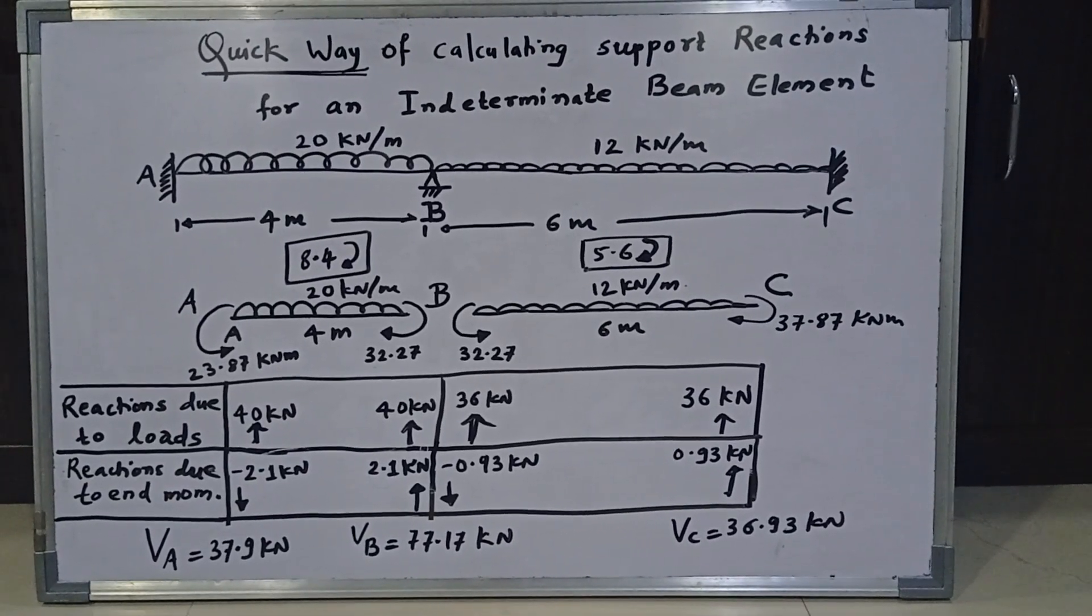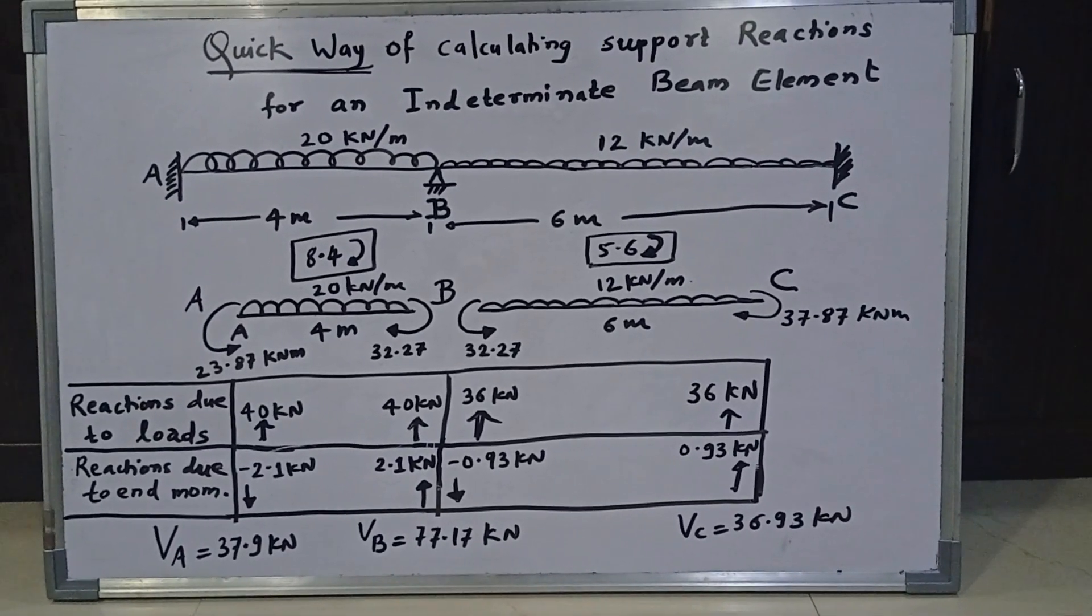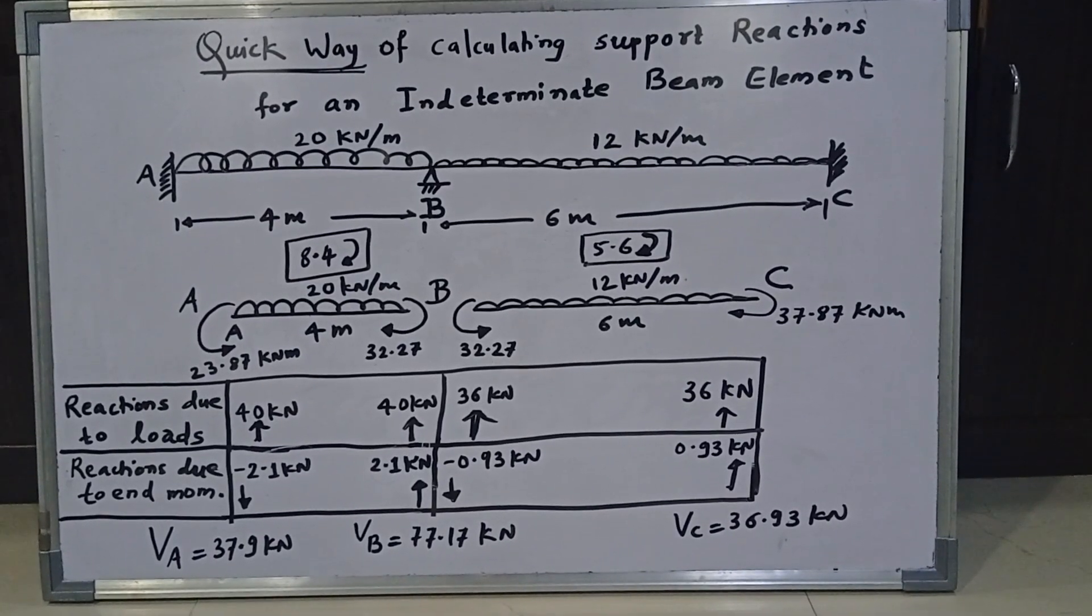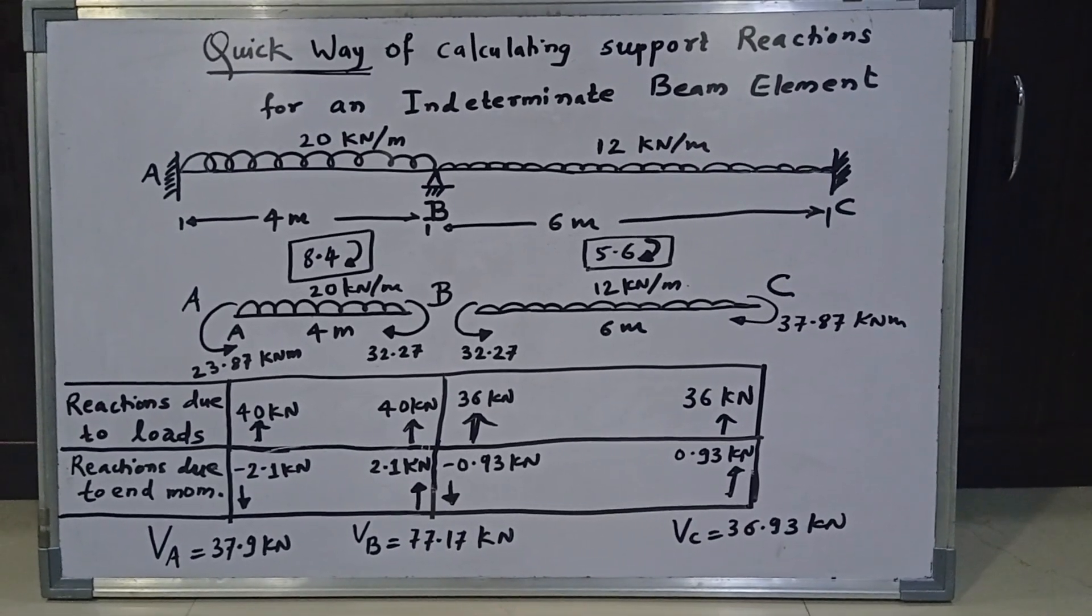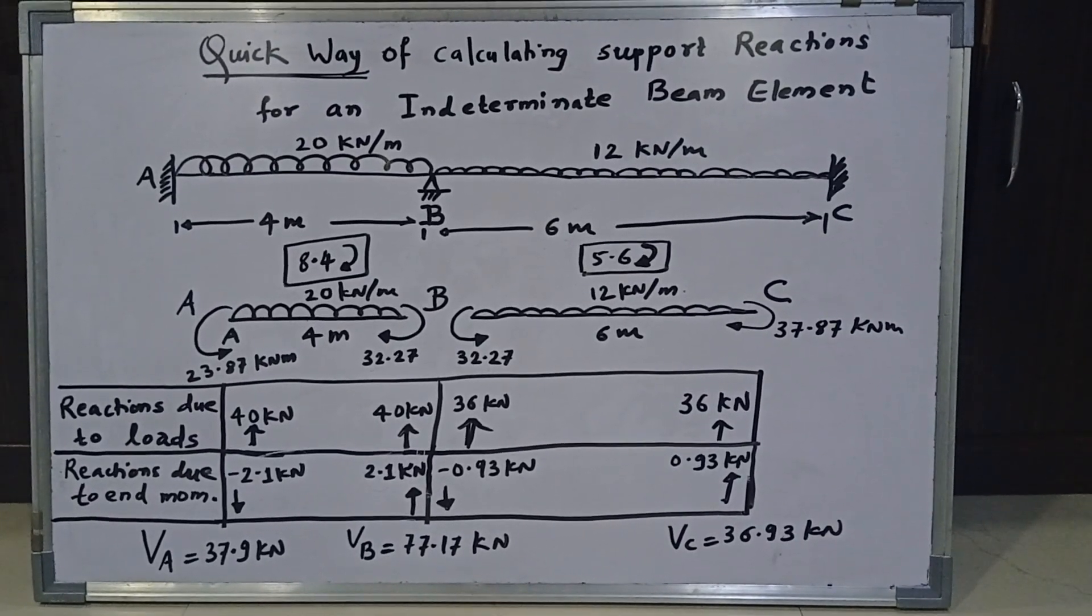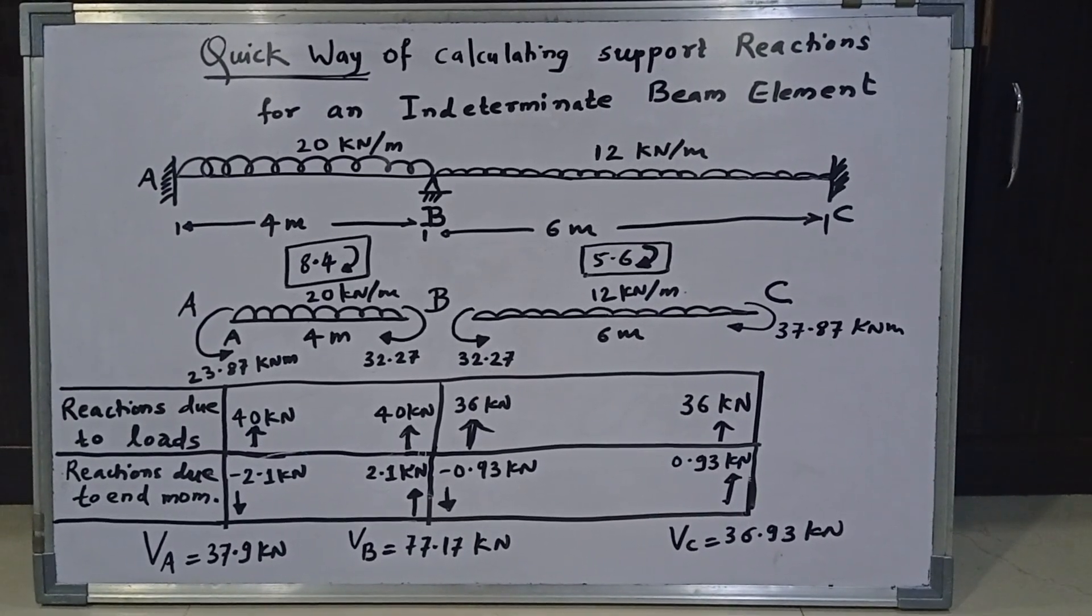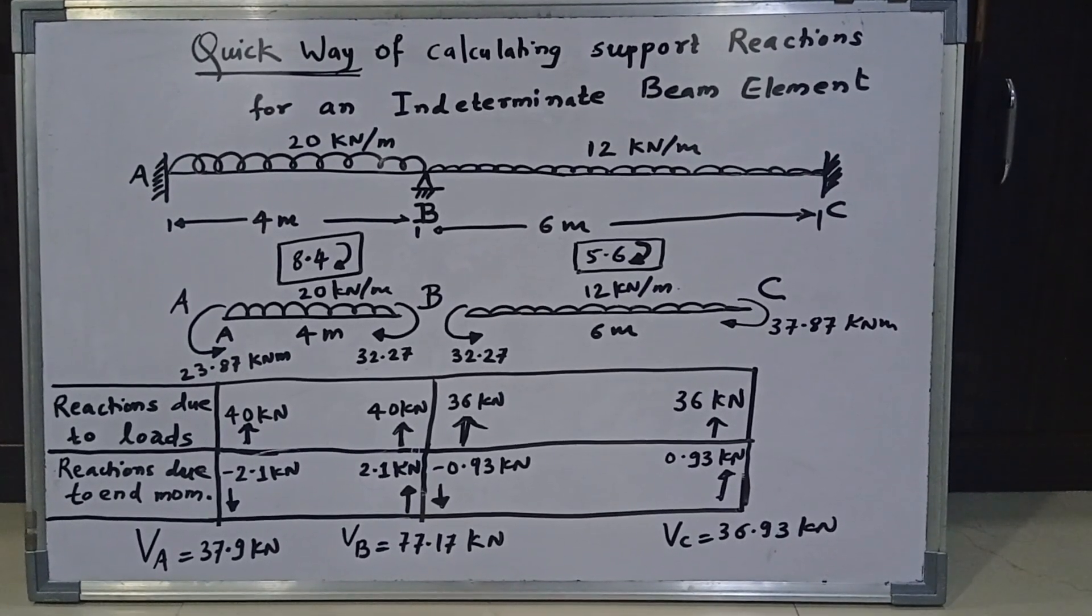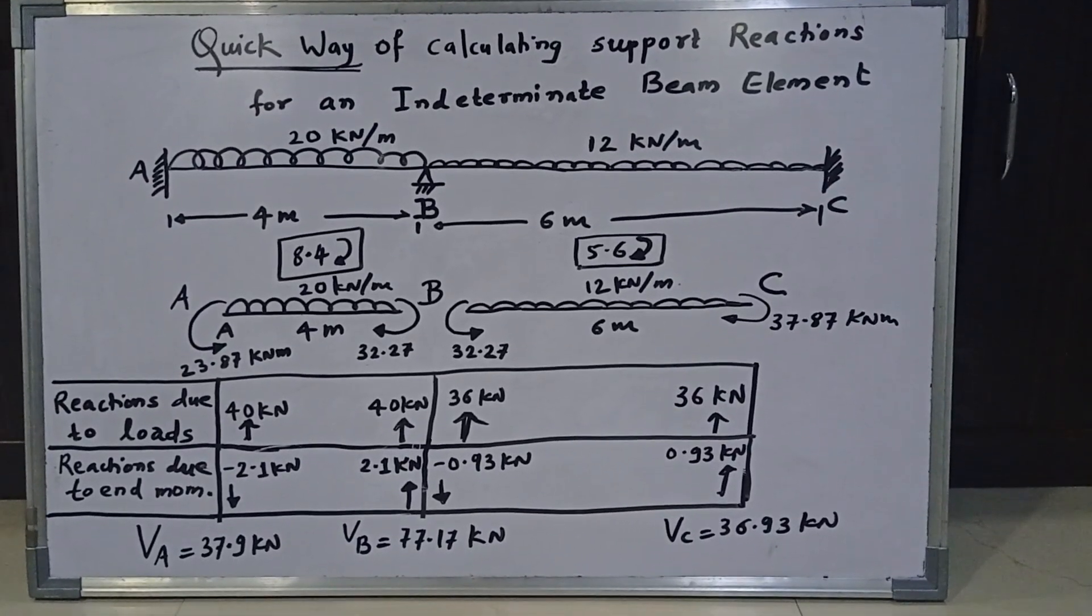Now after this step, we have to calculate vertical reactions at A, B and C. So normally what students do is they consider A-B and B-C as separate spans. I mean they consider the free body diagram of two spans. And then they start applying summation of M and summation of FY, that is equilibrium equations for span A-B and B-C separately. And then they calculate VA, VB and VC. Of course that is a correct method. But if you want to avoid all that, then we can have a quick way of calculating support reactions just by using this table method.